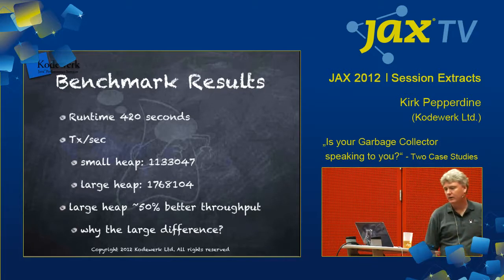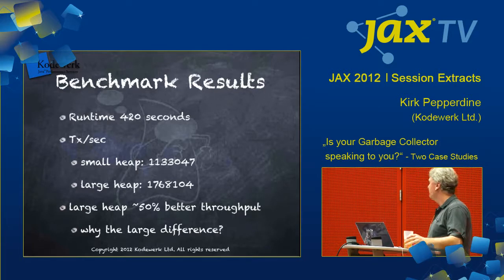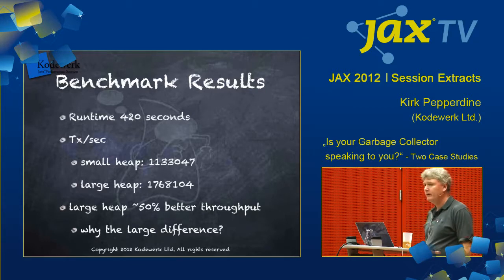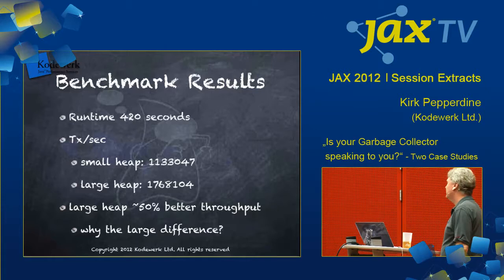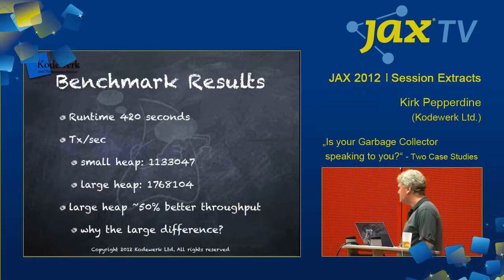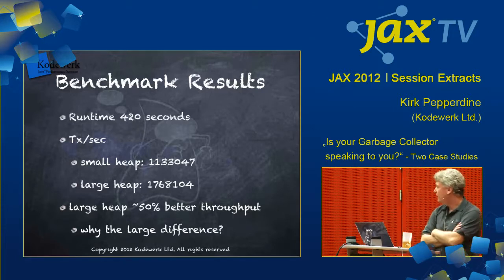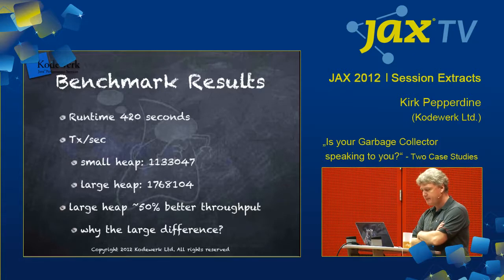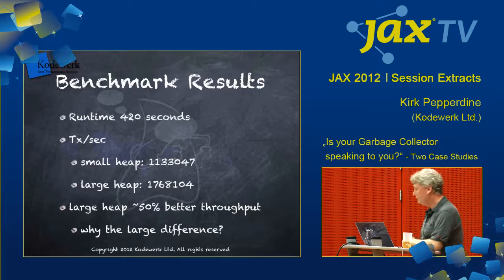This thing ran for about 420 seconds in these particular runs. At the small heap, there's our transactional rate — that's the rate at which we're retiring the requests. With a large heap, we got like a huge, 50 percent better throughput with a larger heap. And the question is, why such a huge difference, given that the one gig should have been enough memory to manage this particular application?